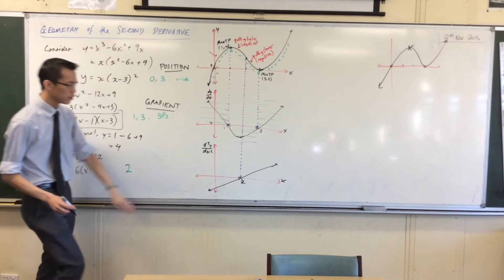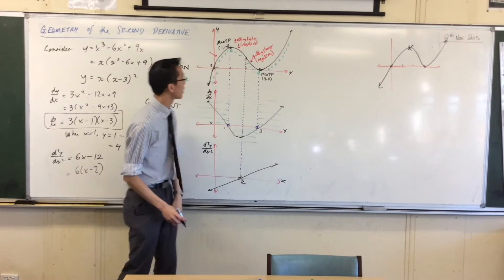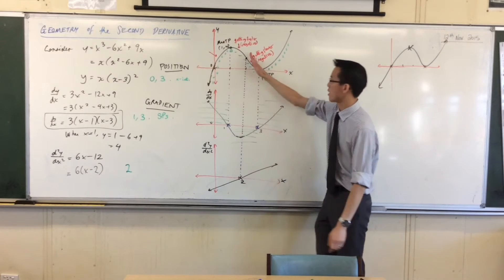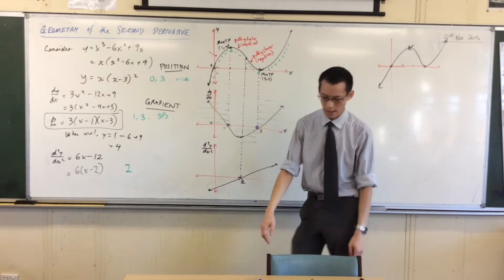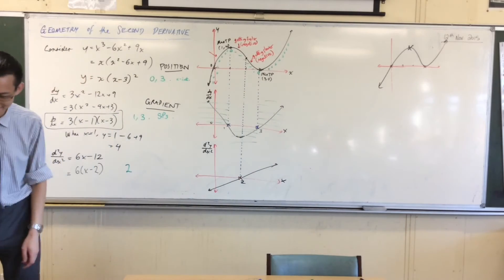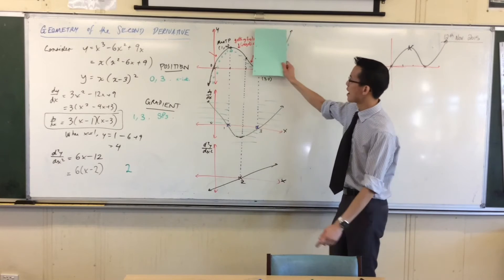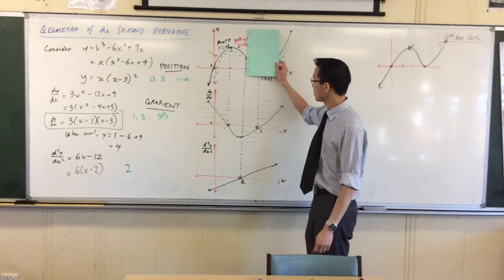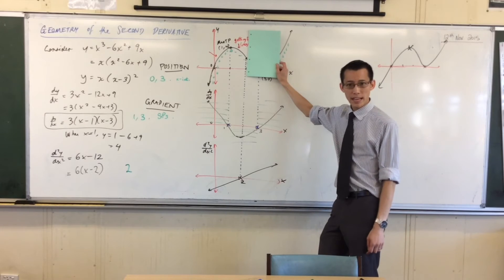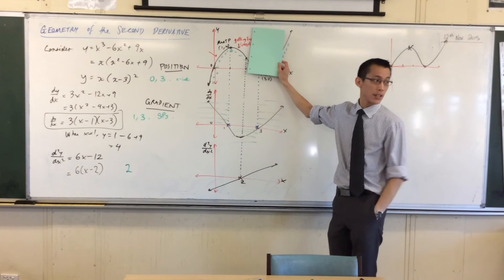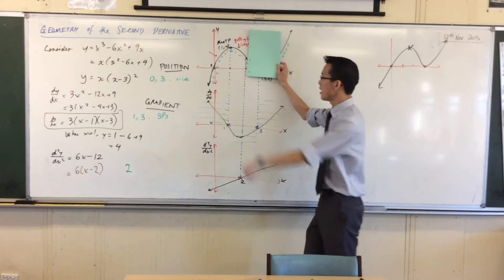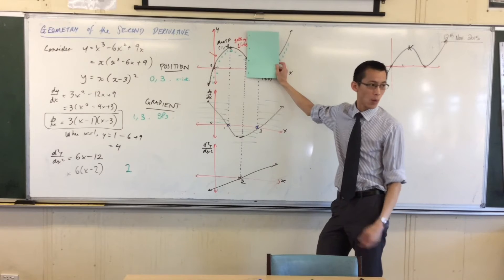Now, looking to the left and to the right of this special point — I want you to cover up half of this graph. Everything to the left of this special point where the behavior changes: I've got a negative second derivative. What that corresponds to is the shape of this graph — imagine it like a cup. It's a cup that's facing down. Which way is this thing facing — up or down — like a parabola.